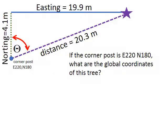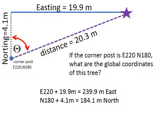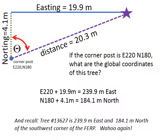Now, those distances are local within a quadrat, here within the east 220, north 180 quadrat. But we want to have the global coordinates for the FERP from the southwest, that is, east 0, north 0 corner post in the southwest corner of the entire plot. To calculate that, we just need to add back in the easting and northing values of the quadrat. In this case, east 220 meters plus 19.9 meters equals 239.9 meters east. And north 180 meters plus 4.1 meters equals 184.1 meters north. Which are the original global coordinates for Tanoak 13627.